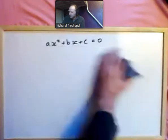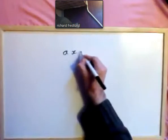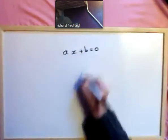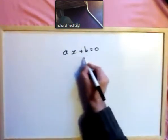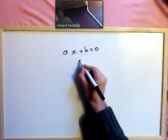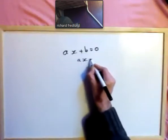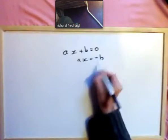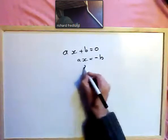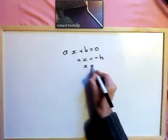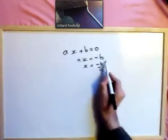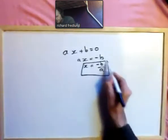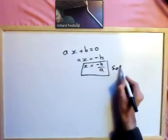To solve the linear equation ax plus b equals zero, it's easy — we just subtract b, so ax equals minus b, then divide by a, giving x equals minus b over a. That is the solution to this equation.